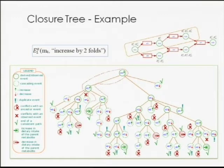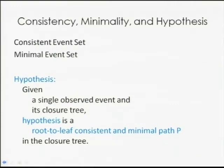There is a notion of a consistent event set. If the same metabolite is derived as increased in one path and decreased in another, they are not consistent. A minimal event set means the path doesn't have the same metabolite occurring twice in the same direction — it's essentially a notion of redundancy, or a simple path. Given a single observed event as the root and its closure tree, a hypothesis is a root-to-leaf consistent and minimal path within the closure tree.